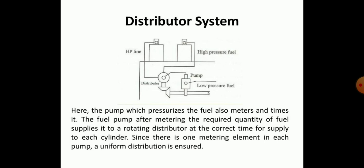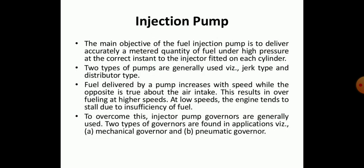In the distributor system, the pump pressurizes and meters the fuel. After metering the required quantity of fuel, the rotating distributor supplies it to each cylinder at the correct time. Since there is one metering element for each pump, a uniform distribution is ensured.